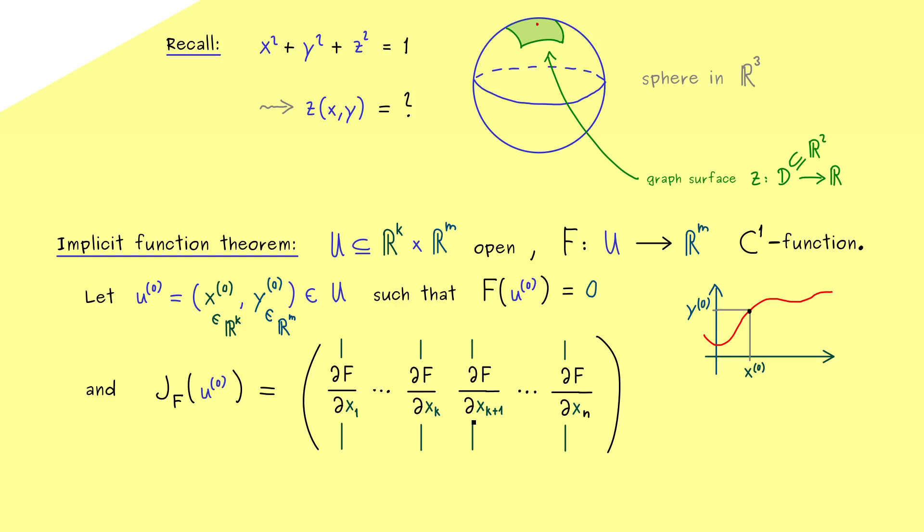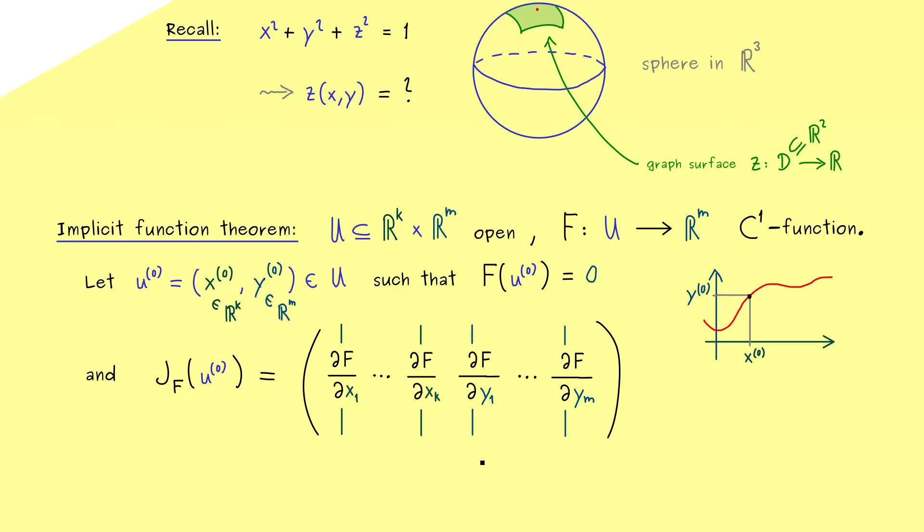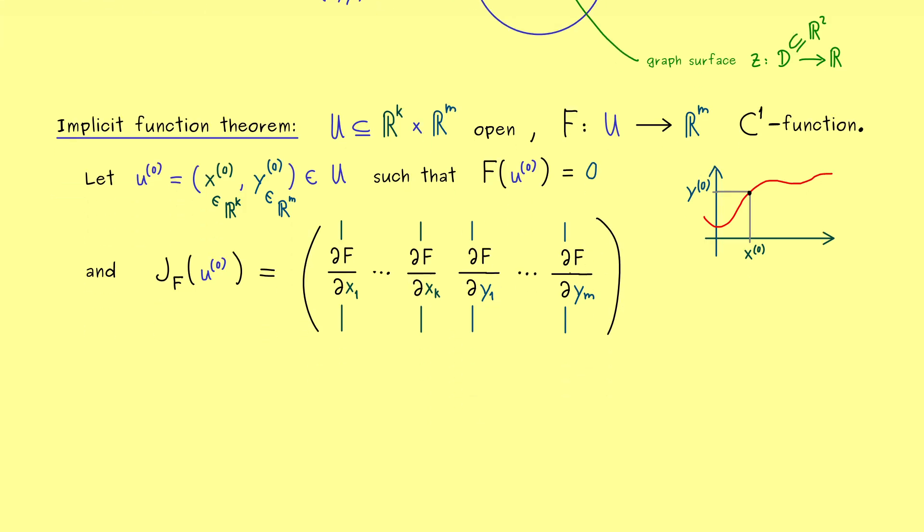However, since we have already renamed the variables to distinguish the two parts in U, we should also rename the partial derivatives. This means x_{k+1} should be simply y_1. And the last column then should be y_m. Indeed, if we write it like that, we see that the Jacobian matrix consists of two matrices inside. Moreover, the right hand side here is a nice square matrix. In fact, it's an m times m matrix. And here it's useful to introduce a short name for that. Let's write ∂F/∂y.